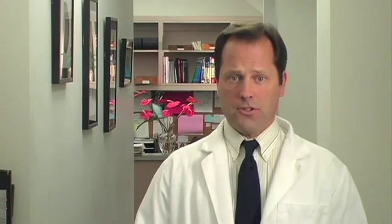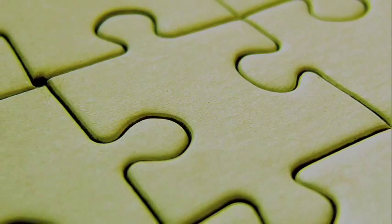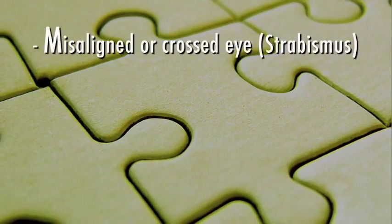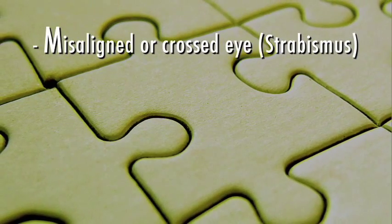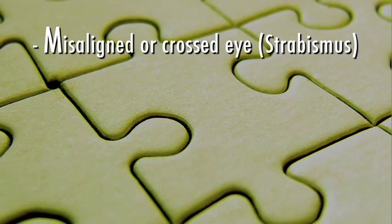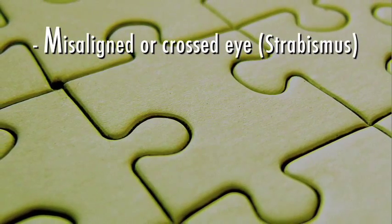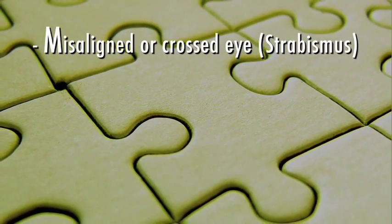In many cases, amblyopia is genetic. There are three main reasons why amblyopia occurs. The first is misaligned or crossed eyes, called strabismus, where double vision is caused by the brain seeing two different images.